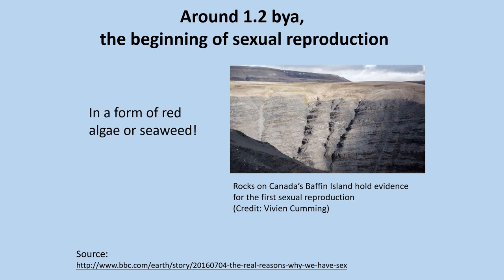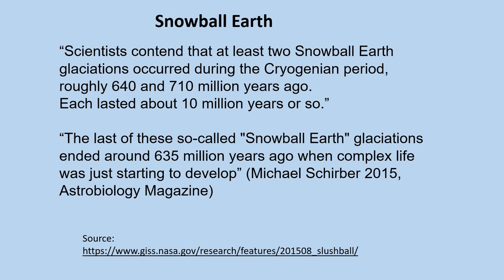Beginning around 1.2 billion years ago, we see sexual reproduction in the form of red algae or seaweed. All that oxygen that was produced led to what is called Snowball Earth. Scientists believe that at least two Snowball Earth glaciations occurred during the aptly named Cryogenian Period between 710 and 640 million years ago, each lasting about 10 million years.